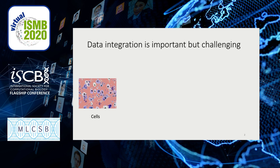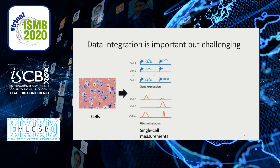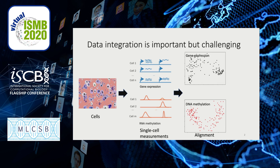As technology advances, it's getting easier and easier to take measurements in single cells. We can measure a lot of things like gene expression and RNA methylation, but a lot of these measurements end up destroying the cells when we take them. So you end up with disparate datasets where you've measured many things but not in the same cells. And ideally, to understand the most about what's going on biologically, you'd like to be able to combine these datasets in some way. And so this is the problem of alignment.